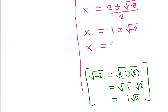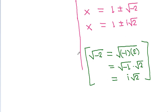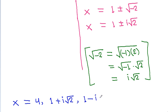That will be iota times square root of 2. So x equals 1 plus or minus iota times square root of 2. Therefore the three values of x are: x = 4, x = 1 + i√2, and x = 1 - i√2.